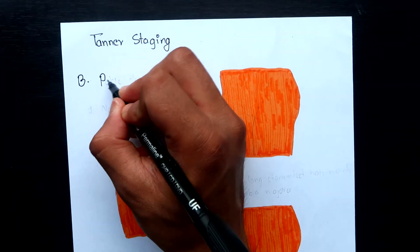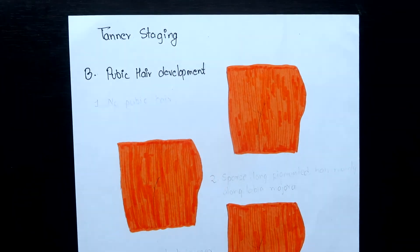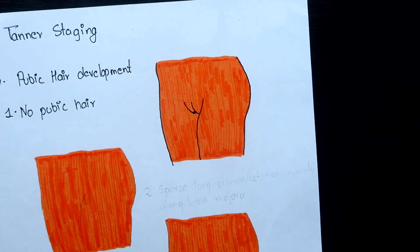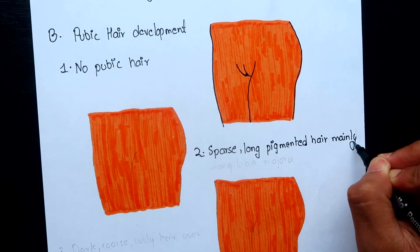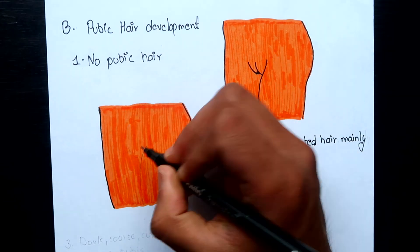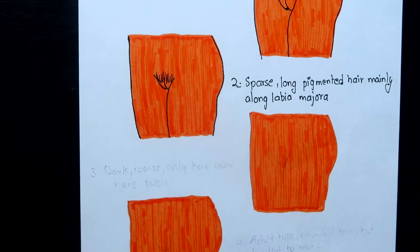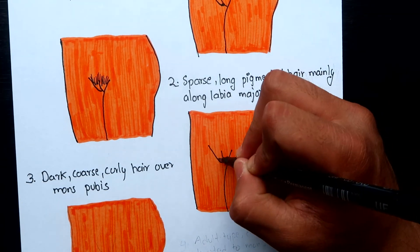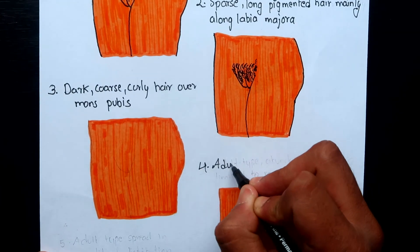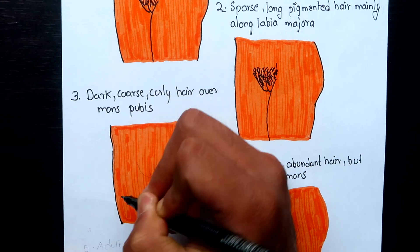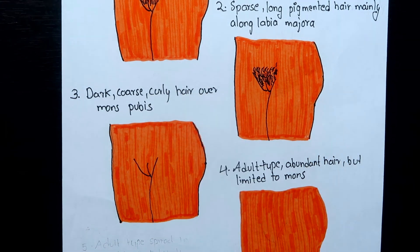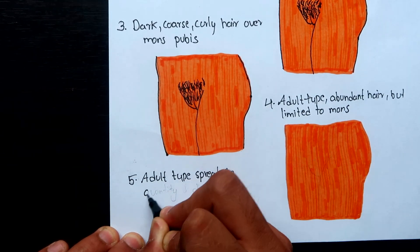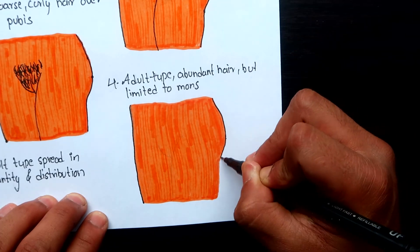Moving on to the Tanner stages of pubic hair development. In stage 1, there is no pubic hair present. In stage 2, sparse, long, pigmented hair mainly along the labia majora. In stage 3, dark, coarse, curled hair sparsely spread over the mons. In stage 4, adult-type abundant hair but limited to the mons. And in stage 5, adult hair with inverted triangular distribution covering the medial thighs.